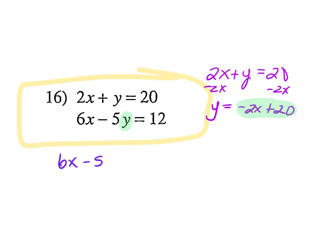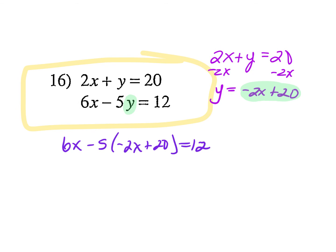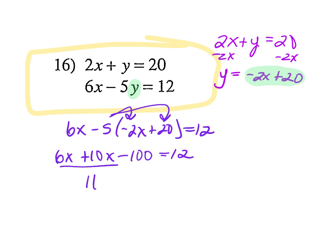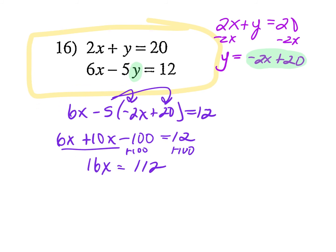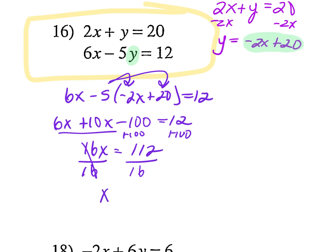Everywhere I see y, I'm going to put negative 2x plus 20. So: 6x minus 5 times (negative 2x plus 20) equals 12. Distribute: 6x, and negative 5 times negative 2 is plus 10x, and negative 5 times positive 20 is minus 100 equals 12. So 6 and 10 gives me 16x. Add 100 to both sides: I get 112. Divide both sides by 16: x equals 7.